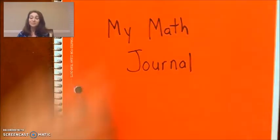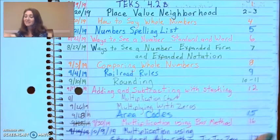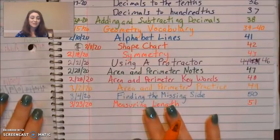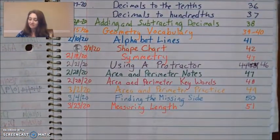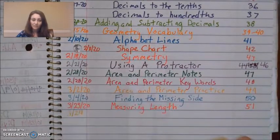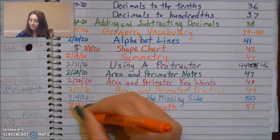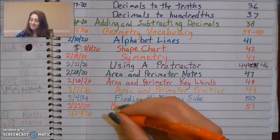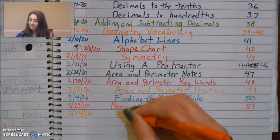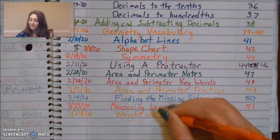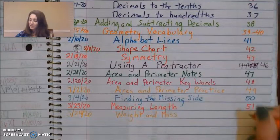Okay, open up your math journal to our table of contents. Put today's date, 3-24-20. And our title or topic for today is going to be weight and mass. And then put whatever your next page is.